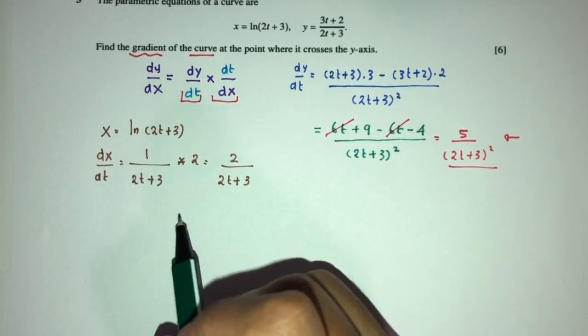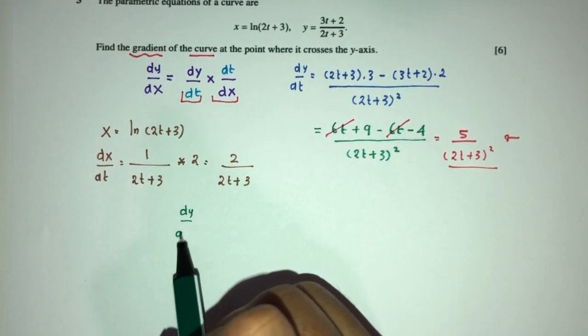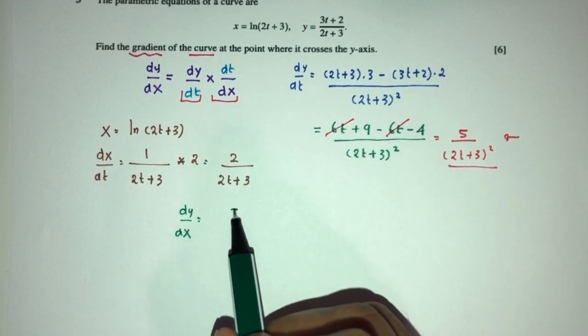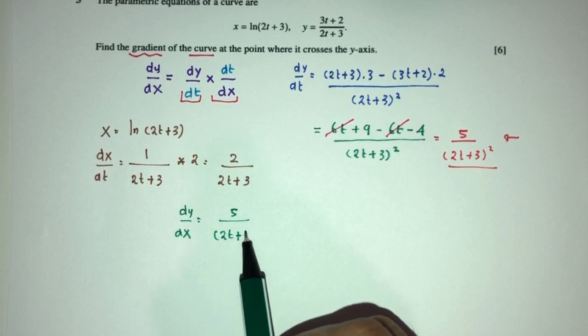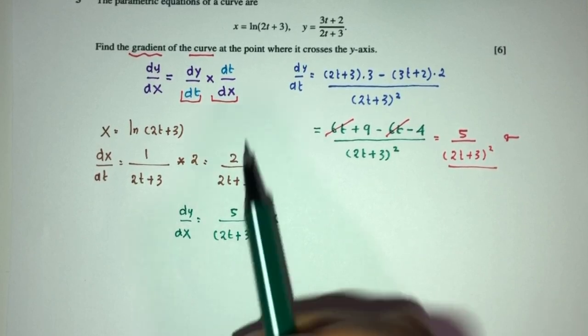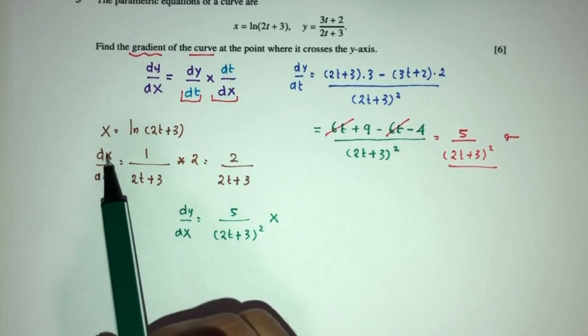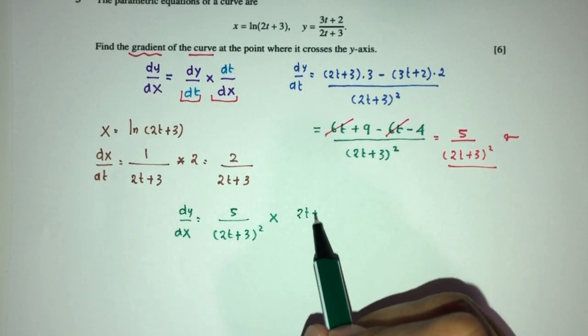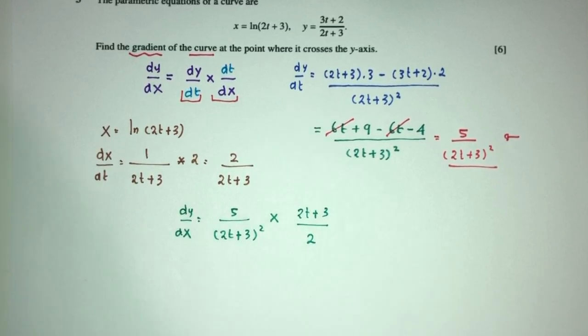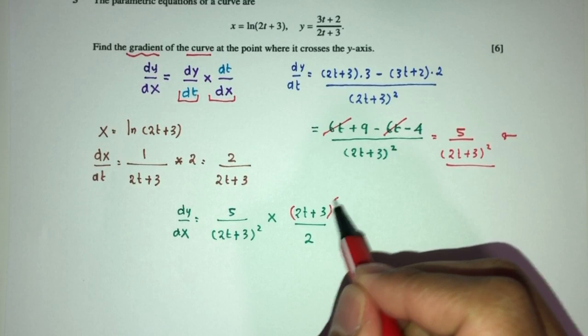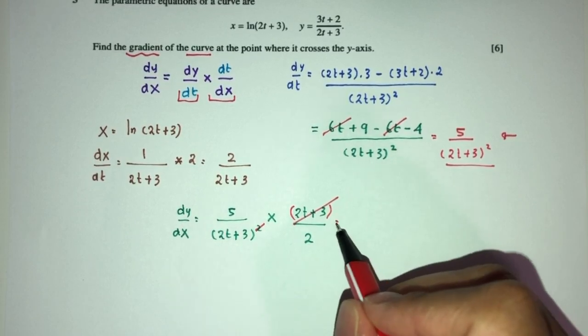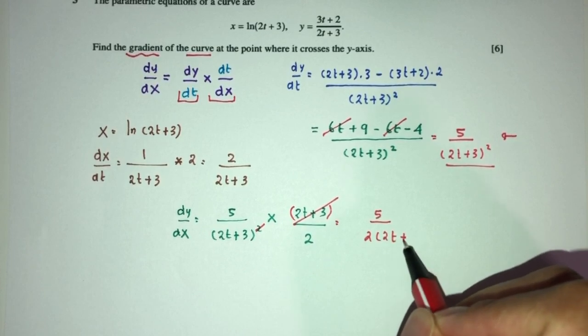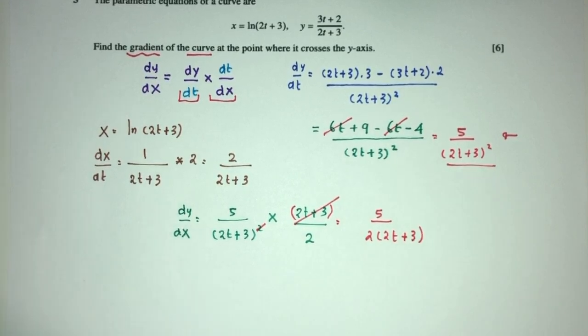Now, finally, once you have those two, place them back in the main equation. So, as you guys can see, dy/dx is defined by dy/dt, which is this one, 5 over (2t + 3)², multiplied by dt/dx. So, here we have dx/dt. So, dt will be flipped upside down. This will go up, and this will go down. And, as you can see, these two will cancel out. So, you have 5 over 2(2t + 3) will be your dy/dx.